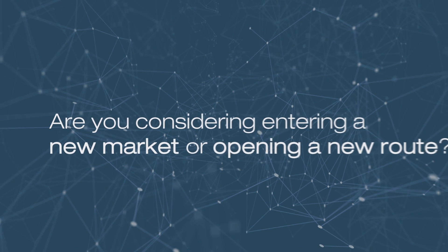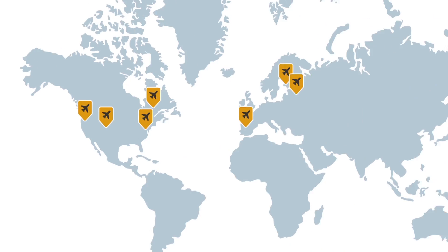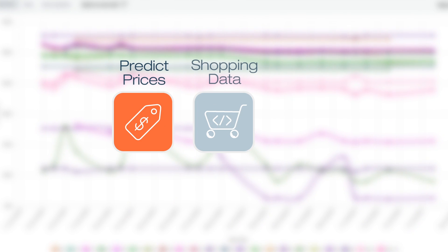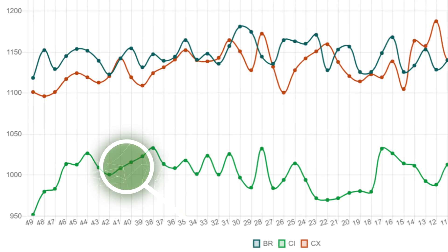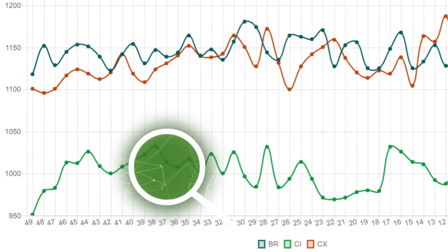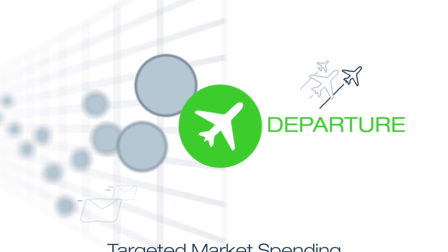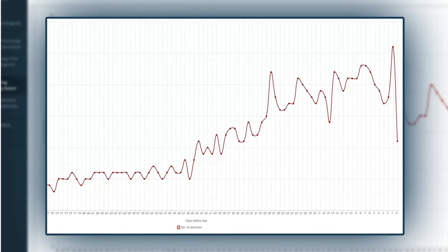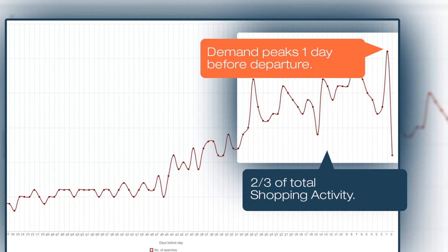Are you considering entering a new market or opening a new route? Think about how much easier it would be to predict price fluctuations with access to shopping data and search demand. AirIQ can do that too. Use AirIQ to track the historical price development of any carrier in the months and weeks prior to departure. Tailor targeted market spending to high demand periods when customers are actually shopping.